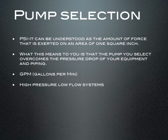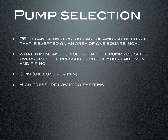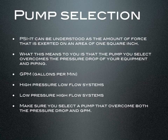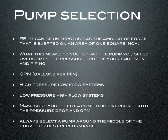There are different pumps for different types of processes. There are high pressure, low flow systems — for example, 40 PSI but only 3 gallons per minute, which we call high pressure pumps. On the other end of the spectrum, there are low pressure, high flow systems — maybe only 5 PSI but 50 gallons per minute. What's important is that you select the pump that overcomes both the pressure drop and gallons per minute. Always select a pump around the middle of the curve for the best performance. If you call our office, we'll help guide you through that.